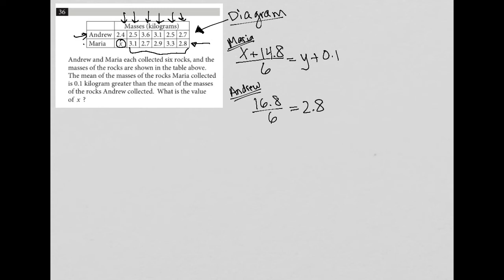So the average is 2.8 here. But what that tells me is that actually instead of saying Y plus 0.1, it tells me that average for Maria is 2.9. Okay, so here's where we can get some traction on this question. Because if X plus 14.8 divided by six is equal to 2.9, I can just solve for X to find that value.